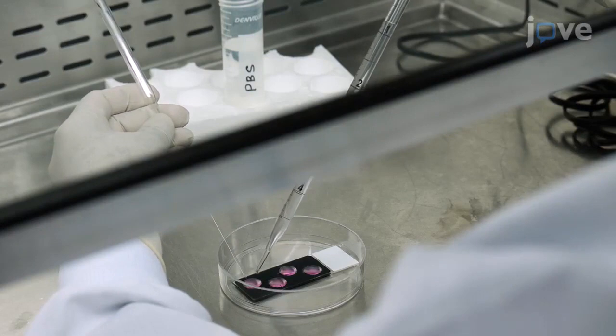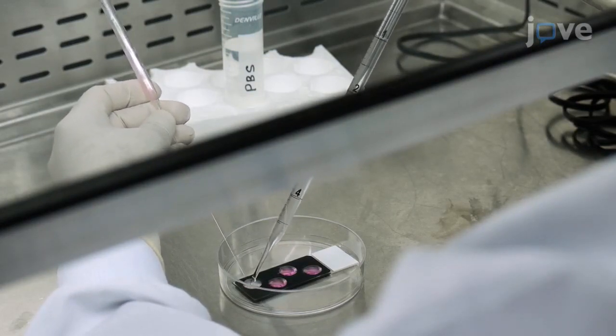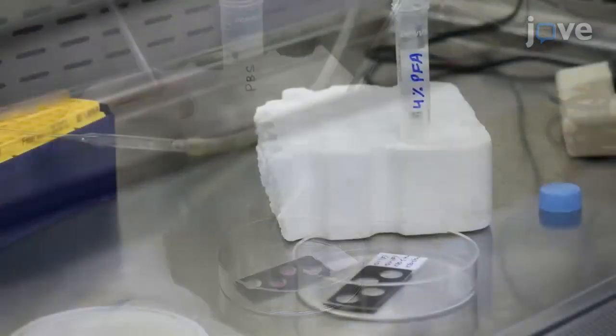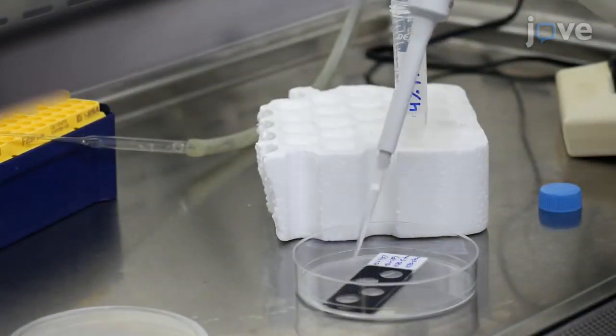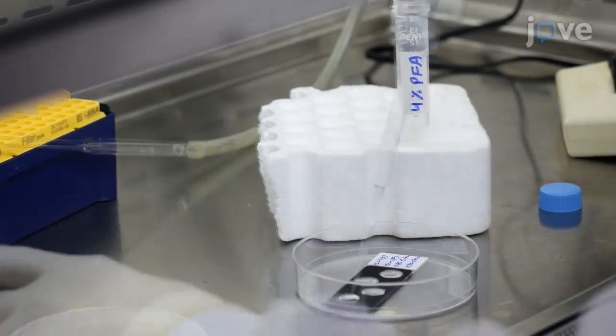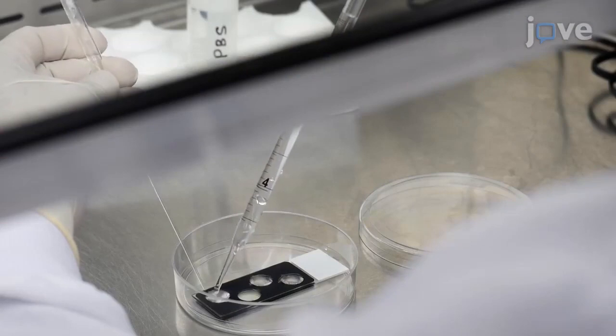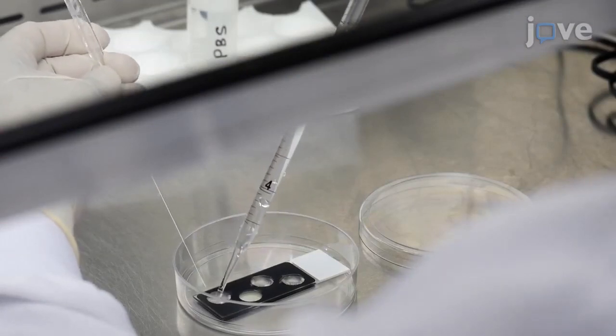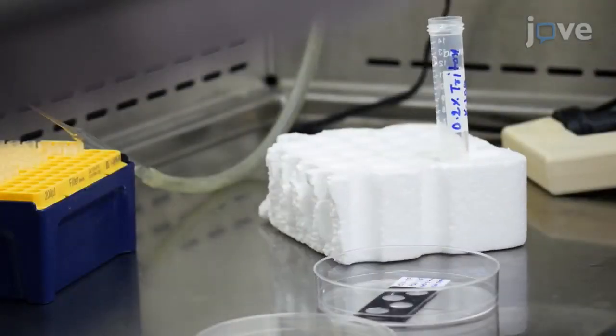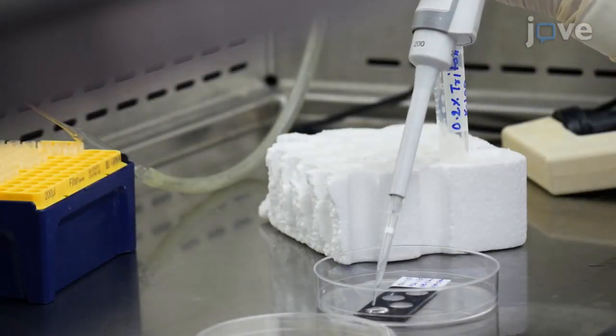For immunofluorescent staining of the virus-infected cells, quickly wash the cells 3 times with PBS, followed by an 8 to 10 minute incubation in 200 microliters of 4% paraformaldehyde in PBS per well. At the end of the fixation, wash the cells 3 times with 200 microliters of PBS per wash, and permeabilize the cells with 100 microliters of 0.2% non-ionic surfactant per well for 5 to 10 minutes.